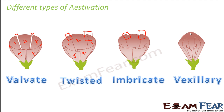Finally, vexillary aestivation is seen in flowers with five petals. Here, some petals are larger and others are smaller. The larger petals are present on the outside and they enclose the smaller petals.